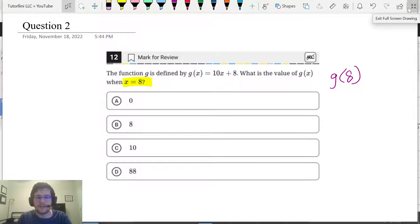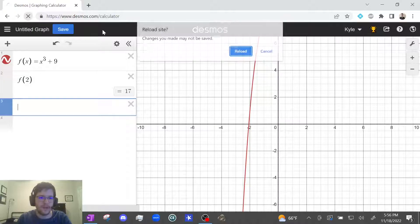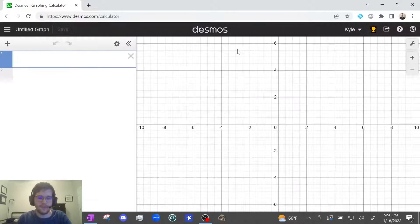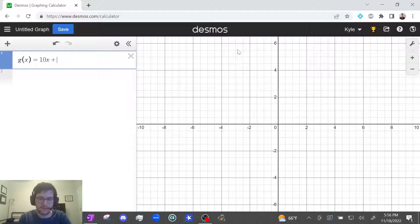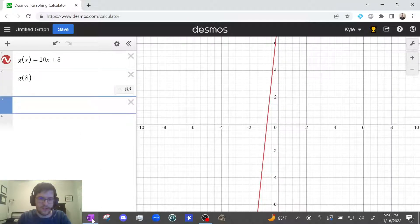But now once you realize that, you just type it in. So let's go to Desmos. And g of x equals 10x plus 8. And then we want to do g of 8. So g of 8. And it tells me g of 8 is equal to 88.